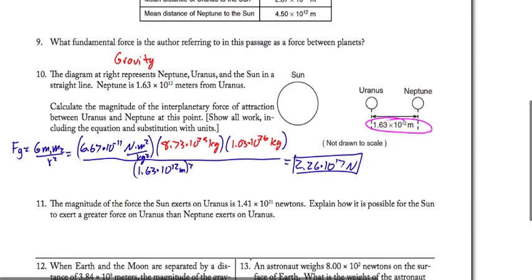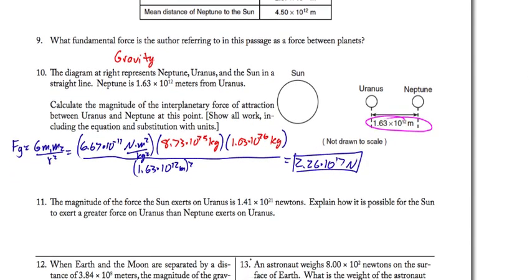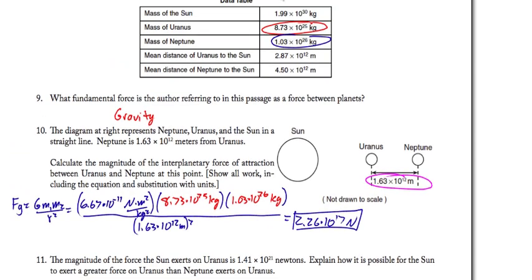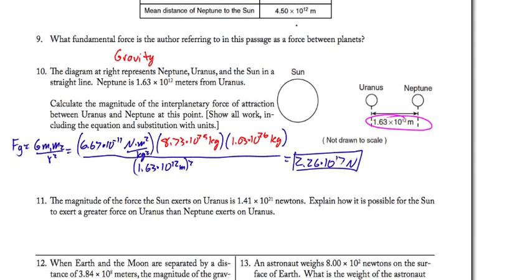Alright. The magnitude of the force the Sun exerts on Uranus is 1.41 times 10 to the 21 newtons. How is it possible for the Sun to exert a greater force on Uranus than Neptune exerts on Uranus? Well, if we look here, the Sun has a much greater mass. Sun has a much larger mass.